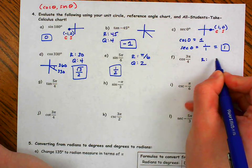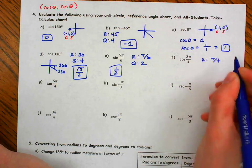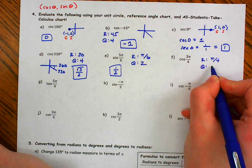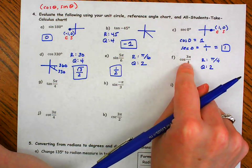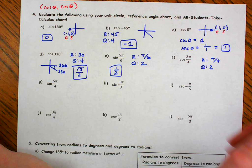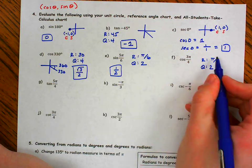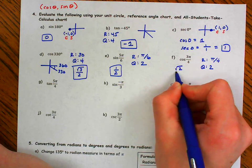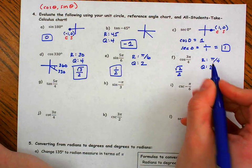Here my reference angle is pi over 4. My quadrant is quadrant 2, because my numerator is 1 less than my denominator. Cosine of pi over 4 is root 2 over 2. Cosine in the second quadrant is negative.